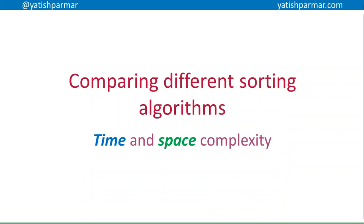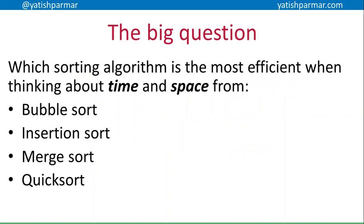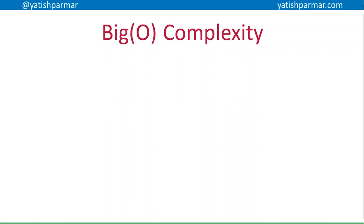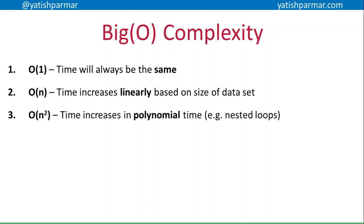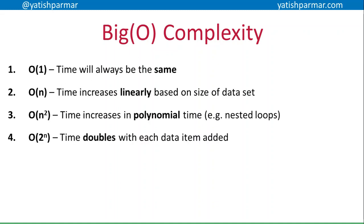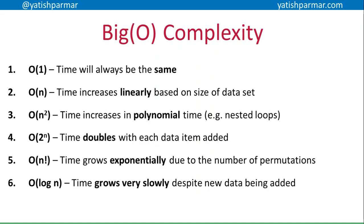So, time and space complexity of the different sorting algorithms. By the end of this video, thinking about time and space complexities, you should be able to decide which of the following is the most efficient algorithm when trying to sort. Remember, Big O complexity — there are six different classifications we're concerned with.